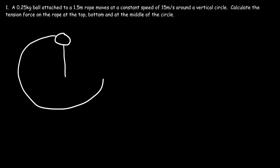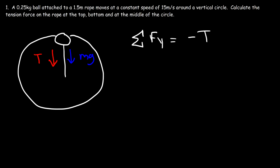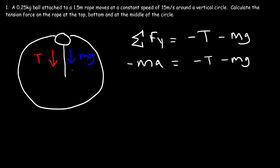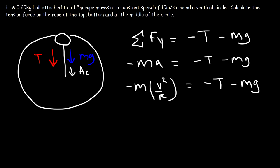At the top of the circle, we have a downward tension force and a downward weight force. So the sum of all forces in the negative y direction gives negative t minus mg. Based on Newton's second law, the net force equals ma, and since it points toward the center — downward at the top — we have negative ma. The centripetal acceleration is v² over r, so the centripetal force equals negative t minus mg.